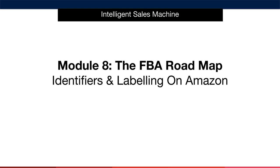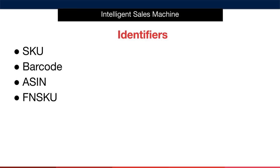Stepping back a little bit is always a good plan at certain parts of the process, and this is certainly one of them. I want to explain some identifiers and labelling options that you will come across and be dealing with soon on Amazon. The identifiers we want to talk about are directly related to us. So let's now deal with SKUs, barcodes, ASINs, and FNSKUs and their relevance and importance to our business with regards to Amazon.